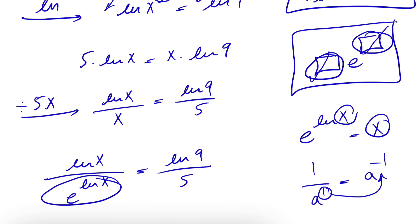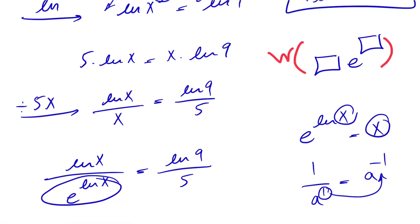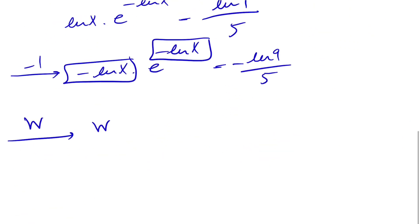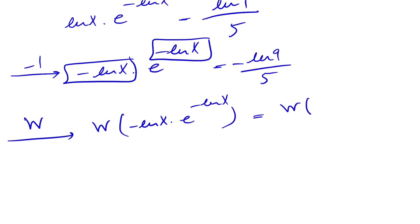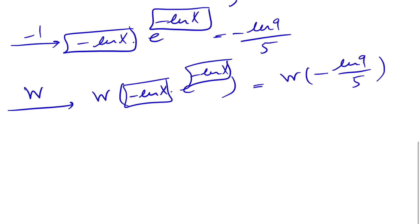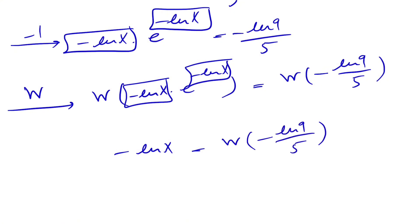Now we're good to go to apply the Lambert W function. Going back to the definition of the Lambert W function: applying W to both sides, W(-ln(x)·e^(-ln x)) gives us the box, which is -ln(x). So we get: -ln(x) = W(-ln(9)/5).